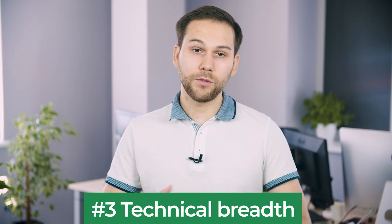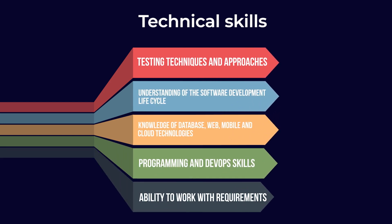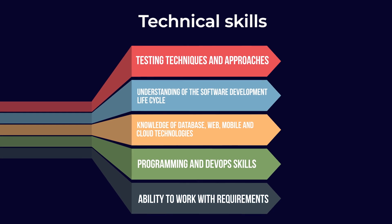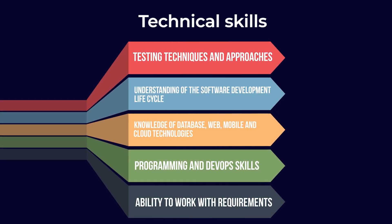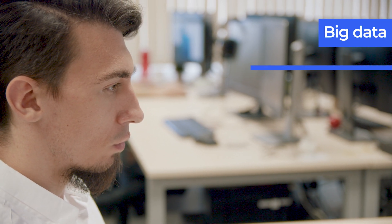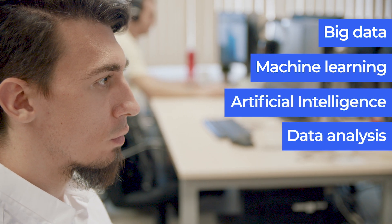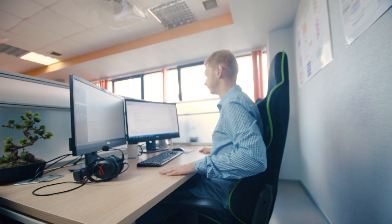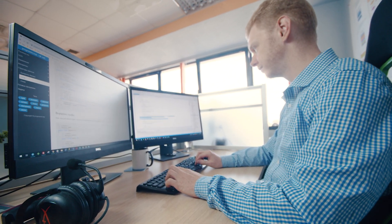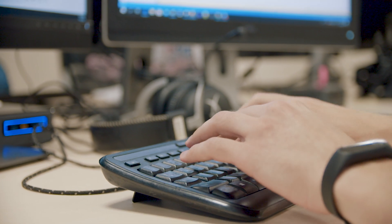Technical breadth: a high level of technical proficiency gives an understanding of how a software product works and where its breaking point may be. The fundamental technical skills testers need include testing techniques and approaches, understanding of the software development life cycle, knowledge of database, web, mobile and cloud technologies, programming and DevOps skills, and ability to work with requirements. Notably, more and more QA engineers study data science technologies, enhancing their big data testing, machine learning, AI and data analysis skills. Test-to-break attitude: there is a difference in mindset between software developers and testers — the first have a desire to build, whereas testers have a hunch where to dig to discover breakage and must find a way to break the software product.